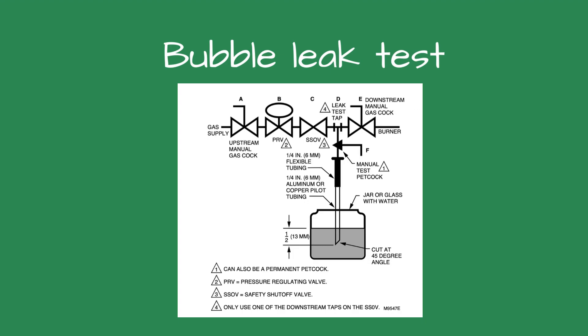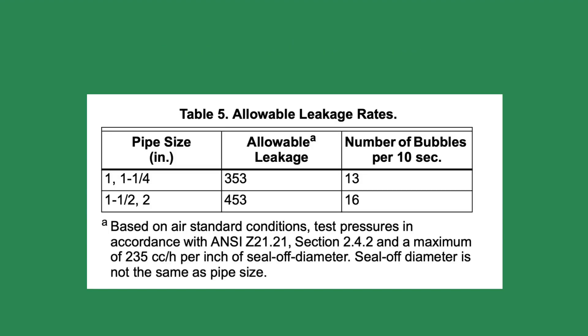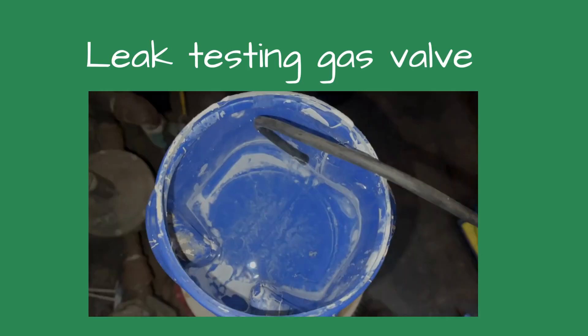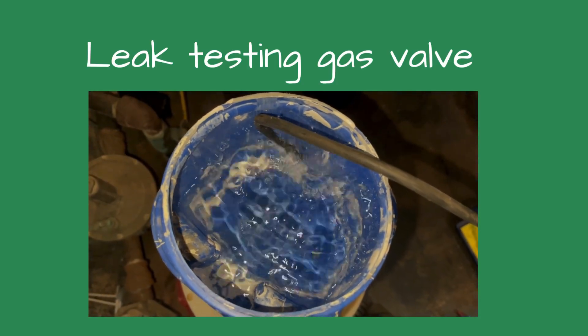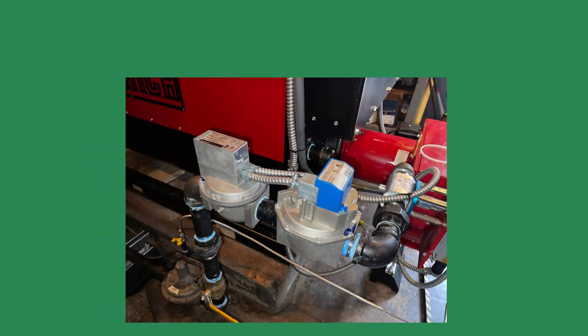The bubble test uses quarter-inch tubing installed downstream of the gas valve. The other end of the tubing is placed in a container of water. To determine if the gas valve is defective, you count bubbles — seriously. According to the manufacturer, the allowable leakage for this valve was 13 bubbles in 10 seconds. Testing this valve reminded me of a toddler blowing bubbles in a glass of chocolate milk with a straw — it leaked like the valve was wide open. As you can see from this video, the bubbles coming up through the gas leak is much more than what the manufacturer recommends.